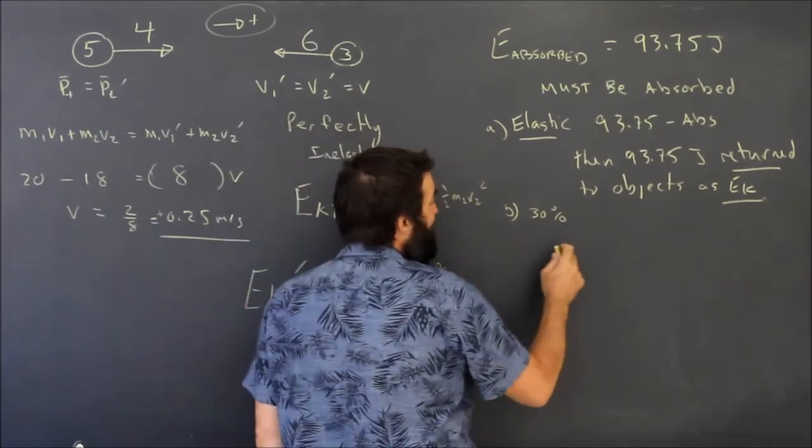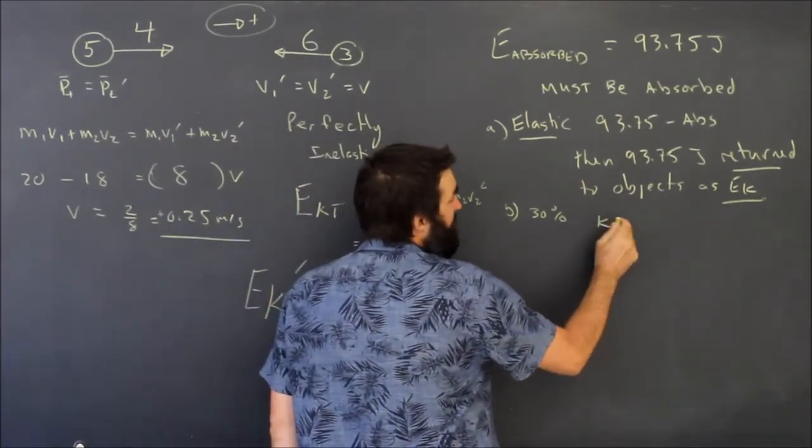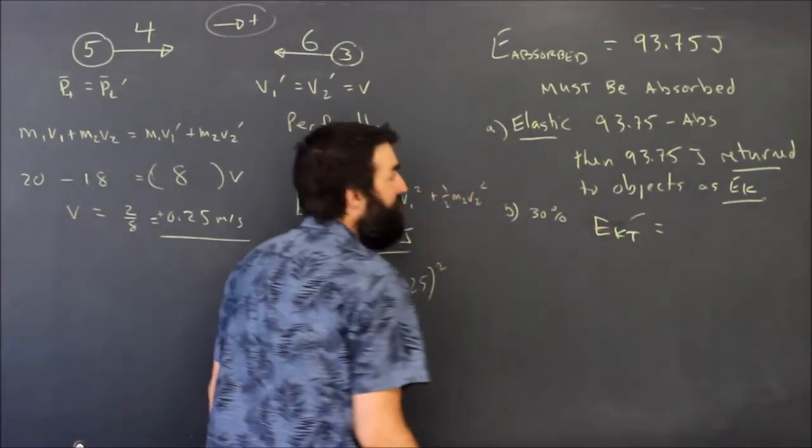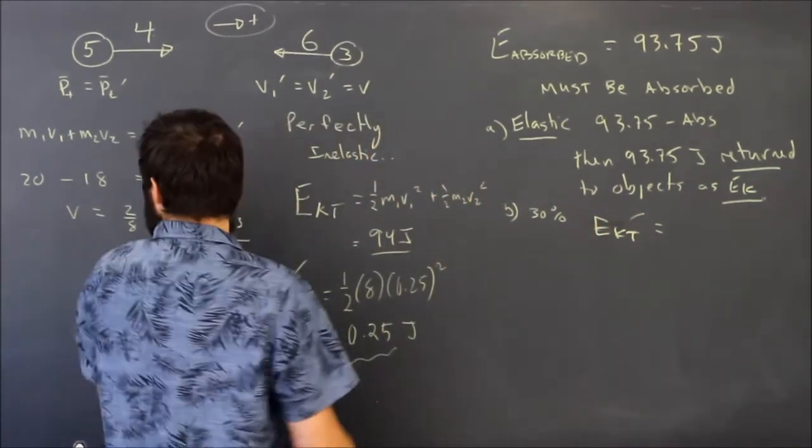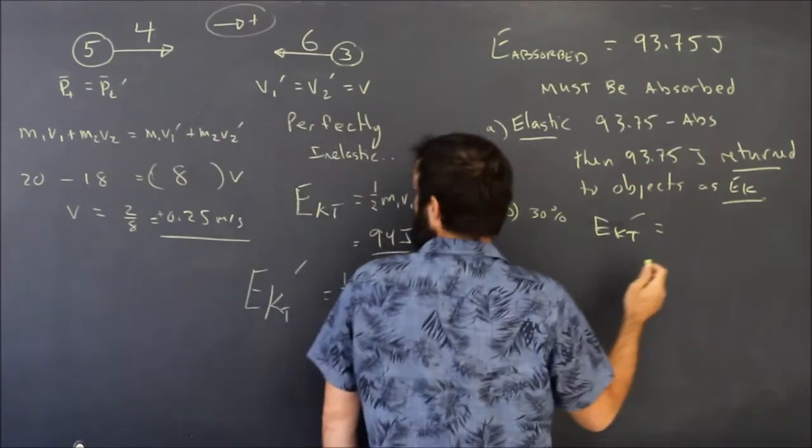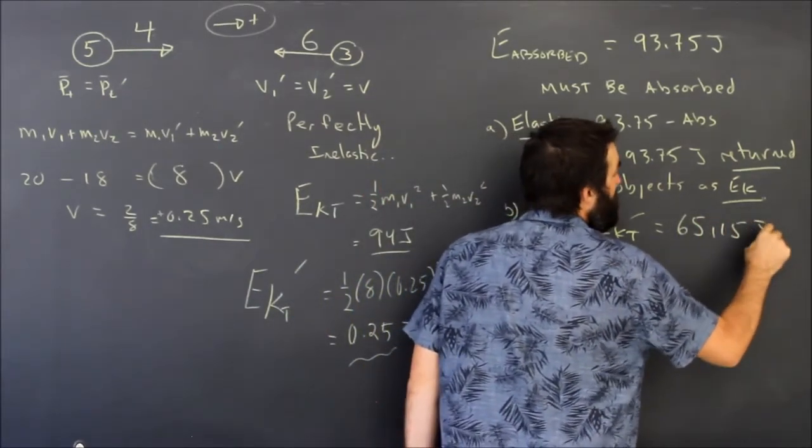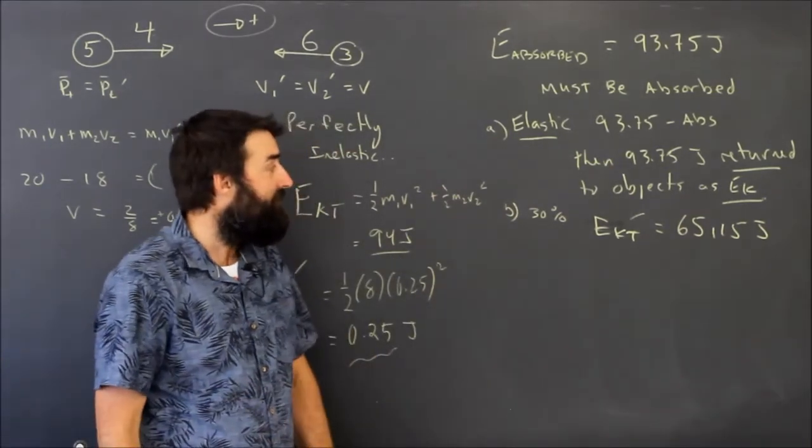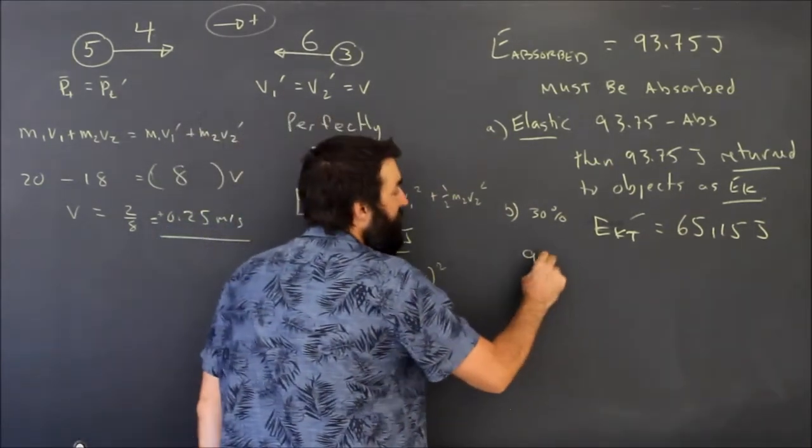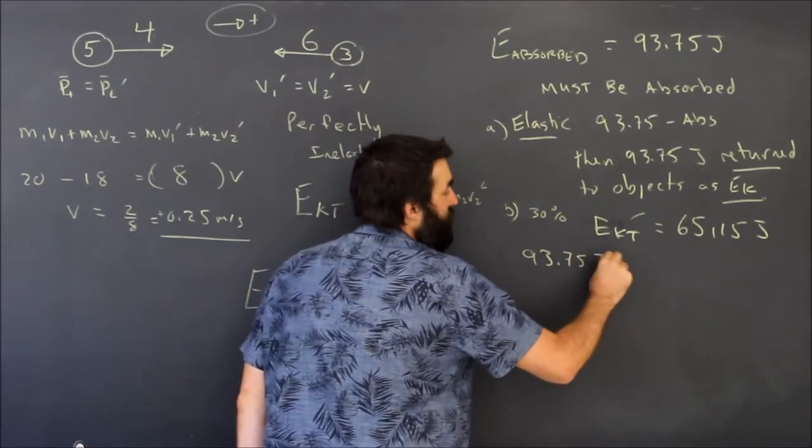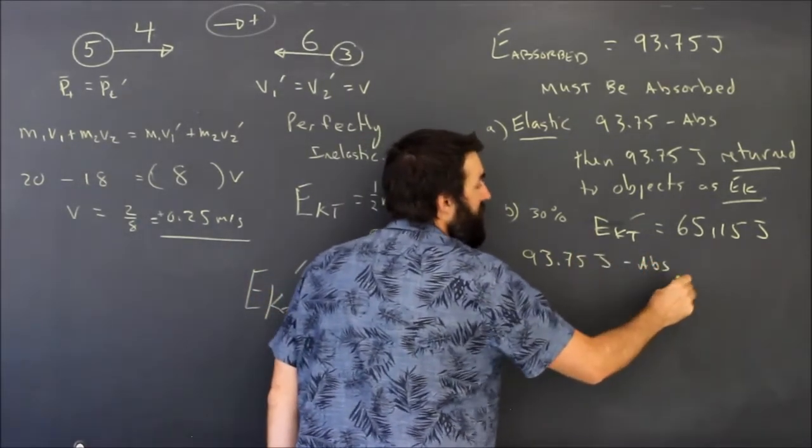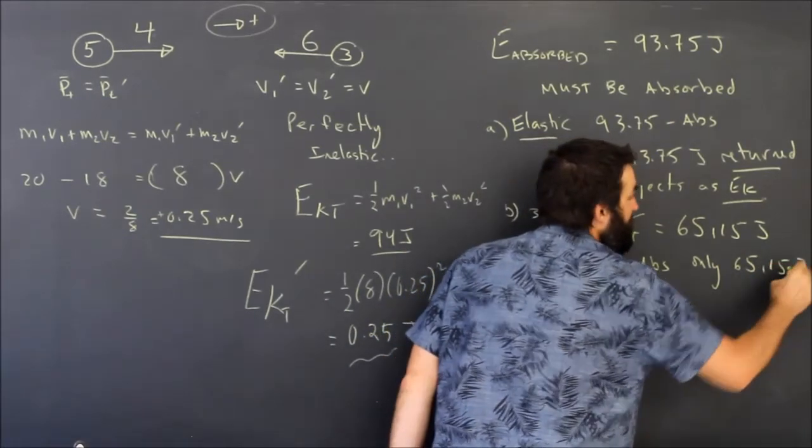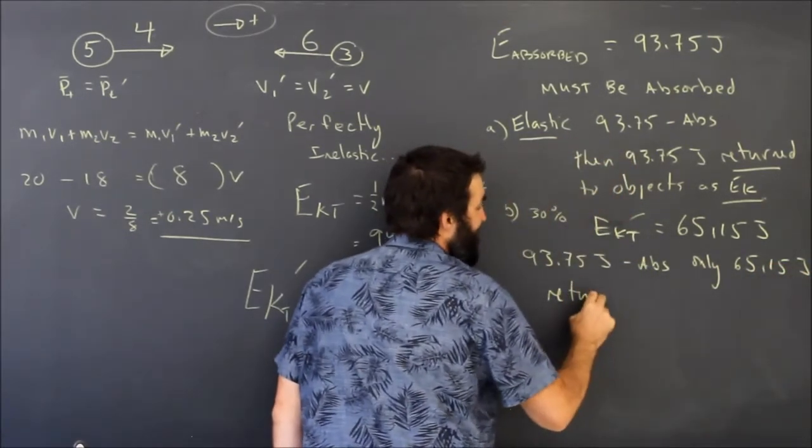The kinetic energy at the end, KT prime, the kinetic energy afterwards in part B, turned out to be 65.15 joules. That's if you take the answers from video B and find the kinetic energy. And that means that 93.75 joules was absorbed, and only 65.15 joules was returned as EK.